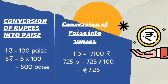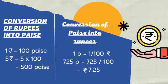Now, let us learn how to convert rupees into paisa. For example, one rupee is equal to one hundred paisa, as you know. So five rupees is equal to five multiplied by one hundred, which equals five hundred paisa.